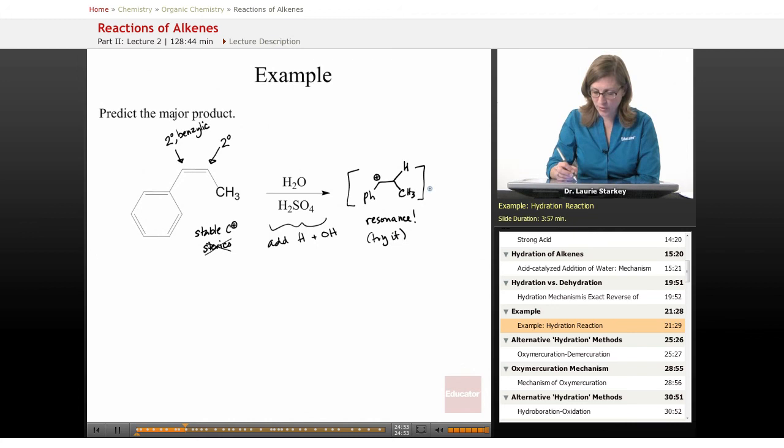And so once we know the carbocation that's going to be formed, now we can go to the product, hopefully without doing a complete mechanism, because where the carbocation was is where our OH group will be added. Remember, adding an H and an OH. And in this case, we'd want to put the OH on the benzylic carbon, because that would be the more stable carbocation.